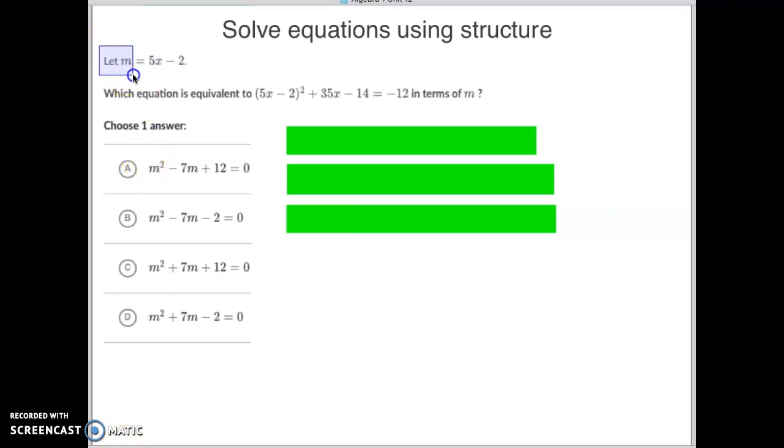So let's kind of go through this one. It is saying that they know that m equals the expression of 5x minus 2. So we're really looking for any expression that is on that format or can be put into that format. So we want to know which equation is equivalent to (5x - 2) quantity squared plus 3(5x - 2) equals -12, but in terms of m, meaning we want to create as much of this as we can.